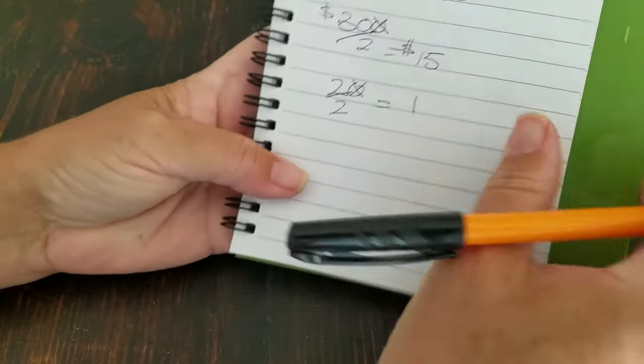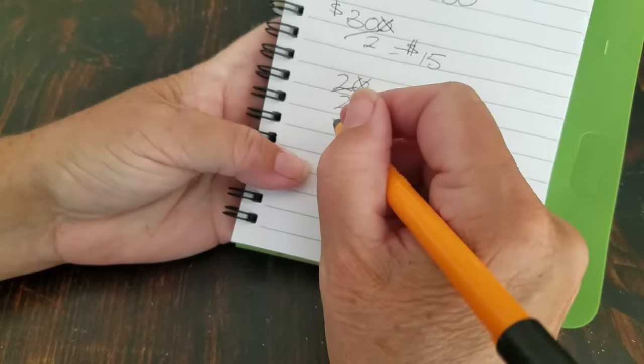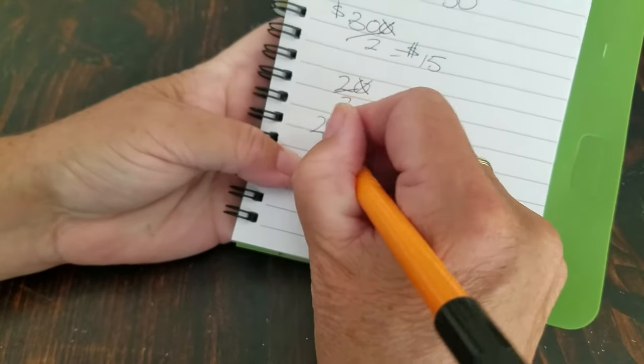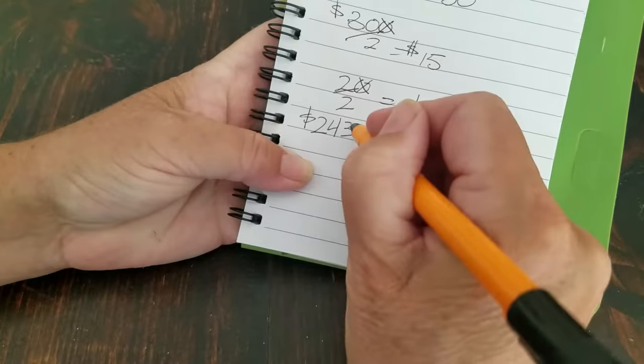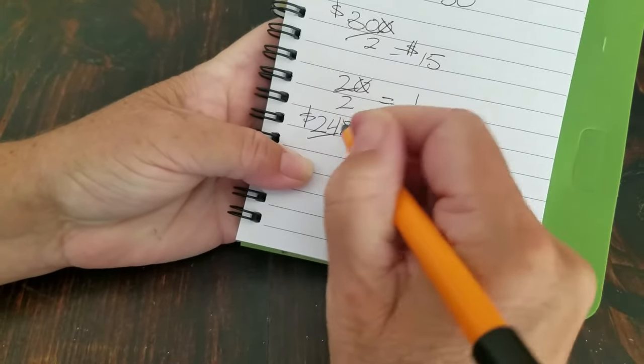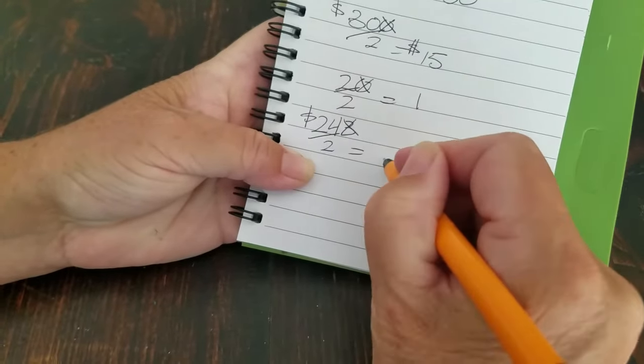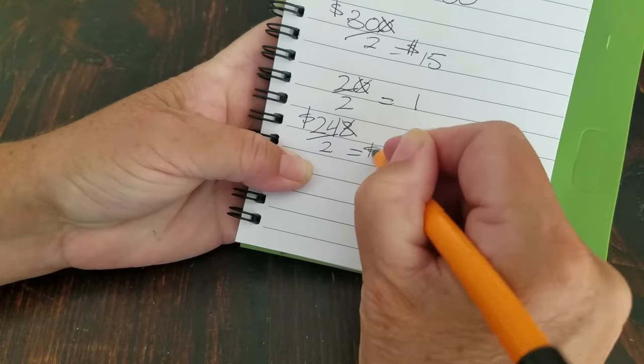It's pretty easy. So if you see something that's worth like 243 pesos, get rid of the 3, divide the 24 by 2, and you get what, 12, $12.